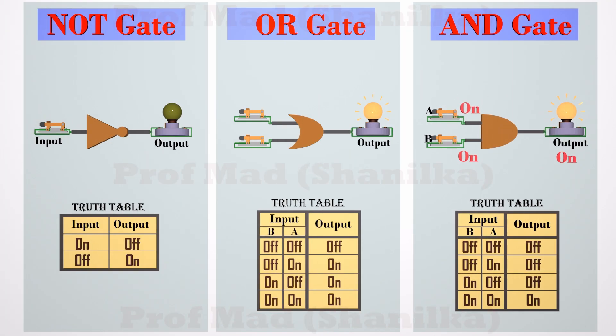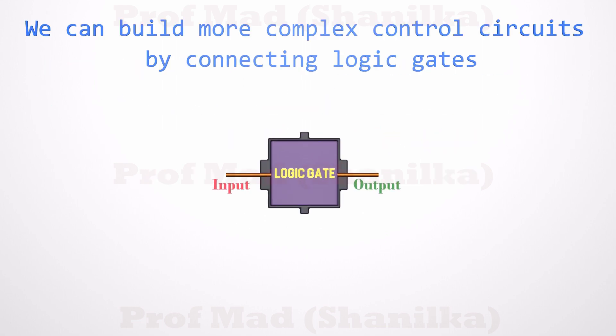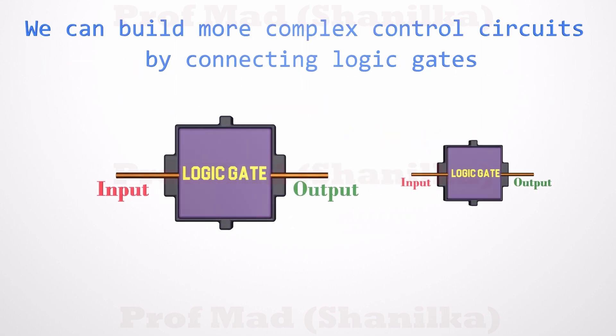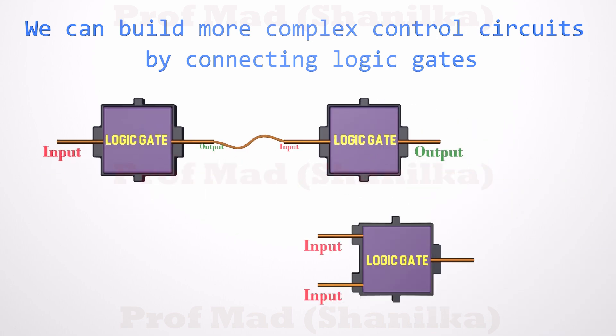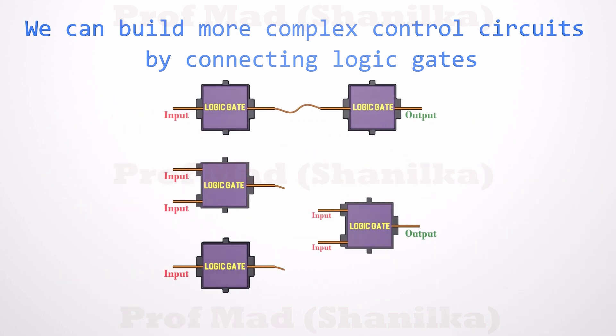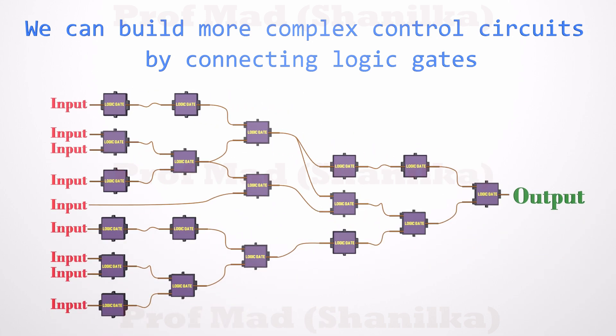Those are the three fundamental logic gates. We can build more complex logic circuits by joining these fundamental logic gates. Joining means we can use the output of one gate as the input of another gate. Every electronic circuit around us is built by connecting millions of logic gates like this.